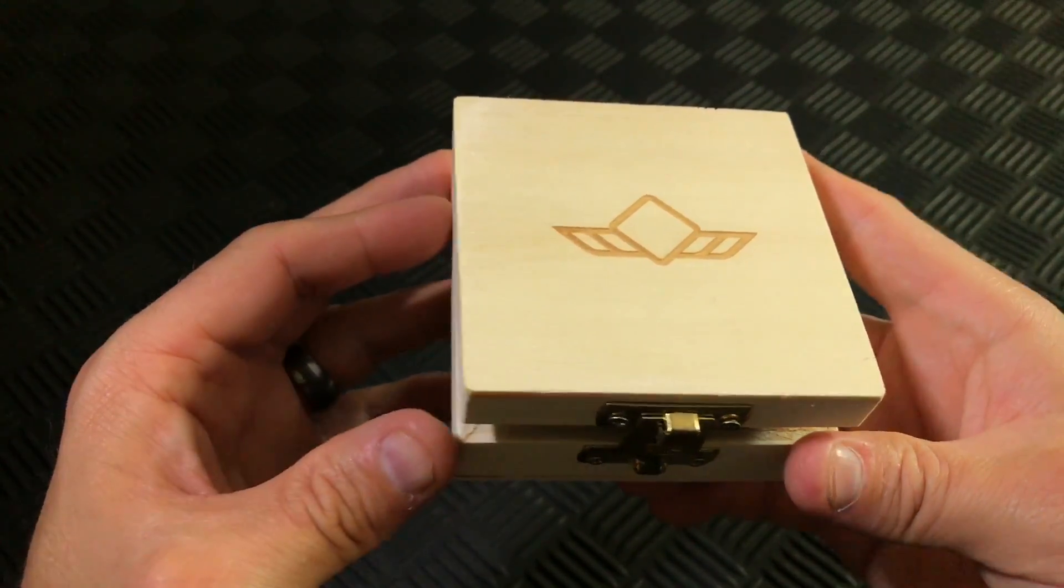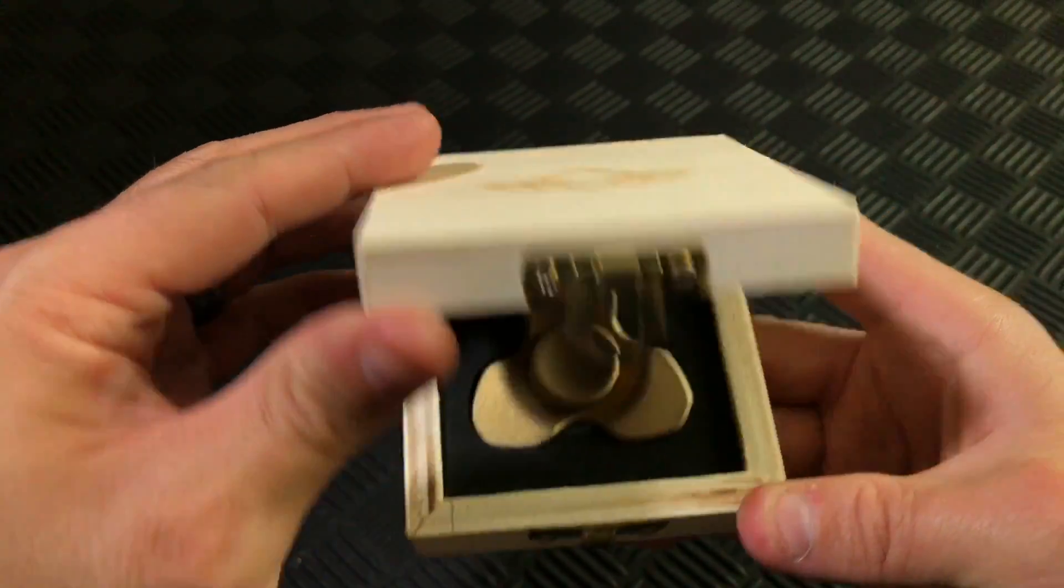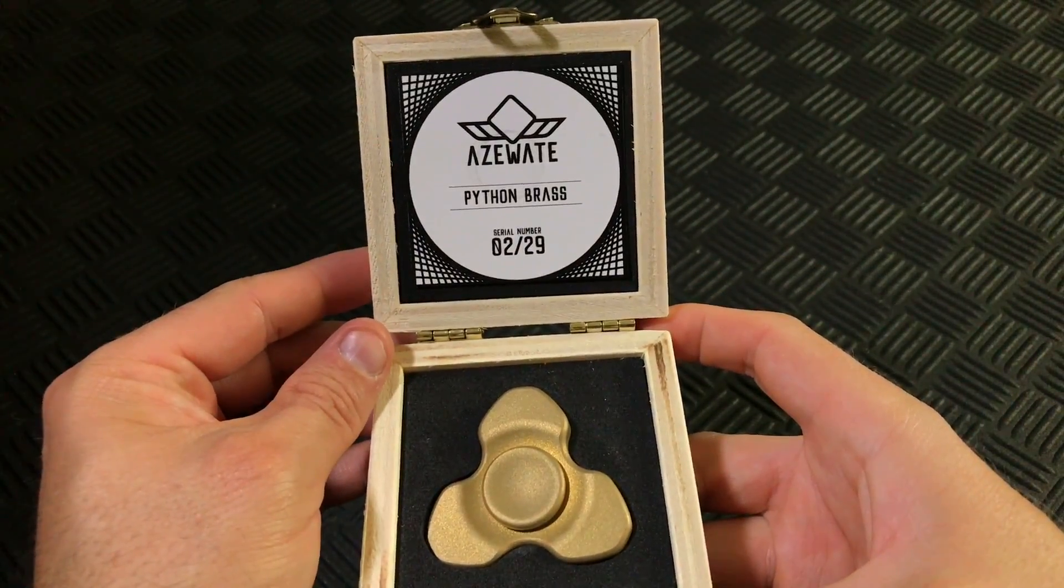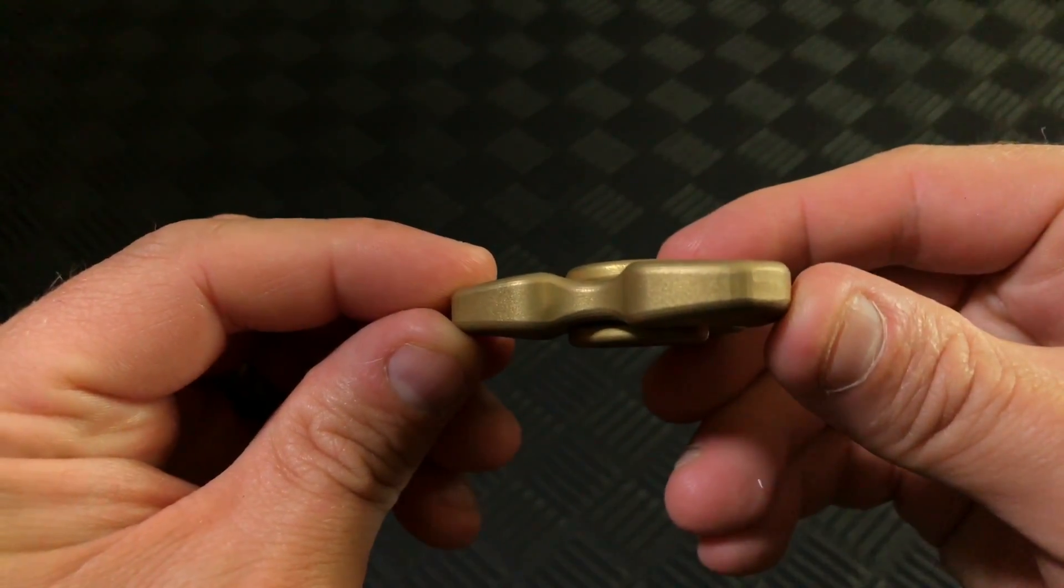The Python Brass comes in this wood box with their logo lasered on top, with a certificate of authenticity inside and some quality custom foam. Looking at the spinner from the side, you can see where the name comes from, as each arm looks like the head of a python.